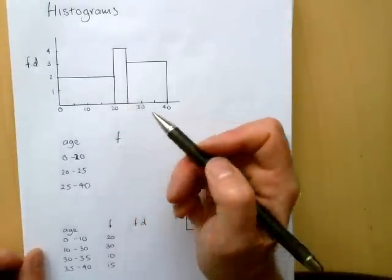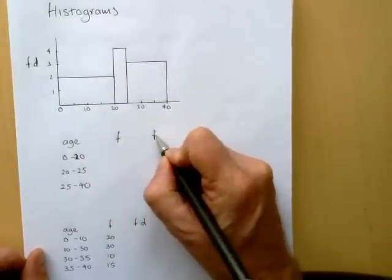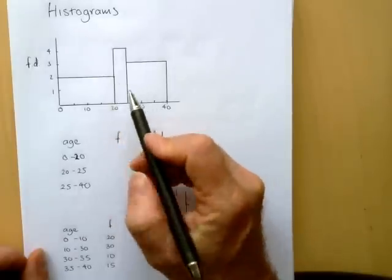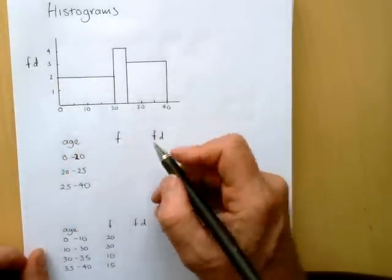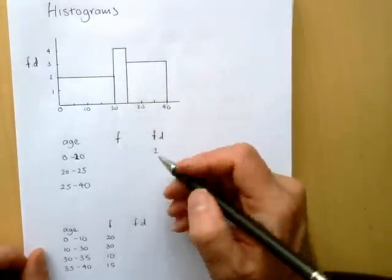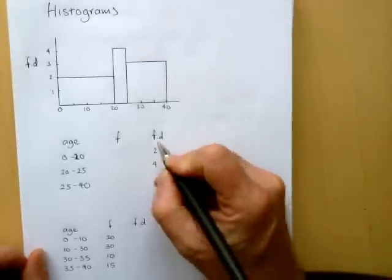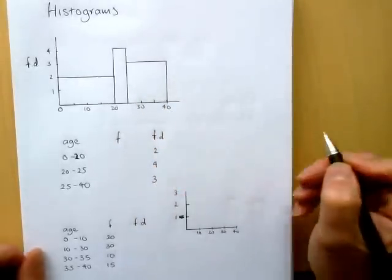So if we look at what we have here, we know that we can read off our frequency densities for each of our intervals. So the 0 to 20 has a frequency density of 2, and 20 to 25 has a frequency density of 4, and 25 up to 40 has a frequency density of 3.